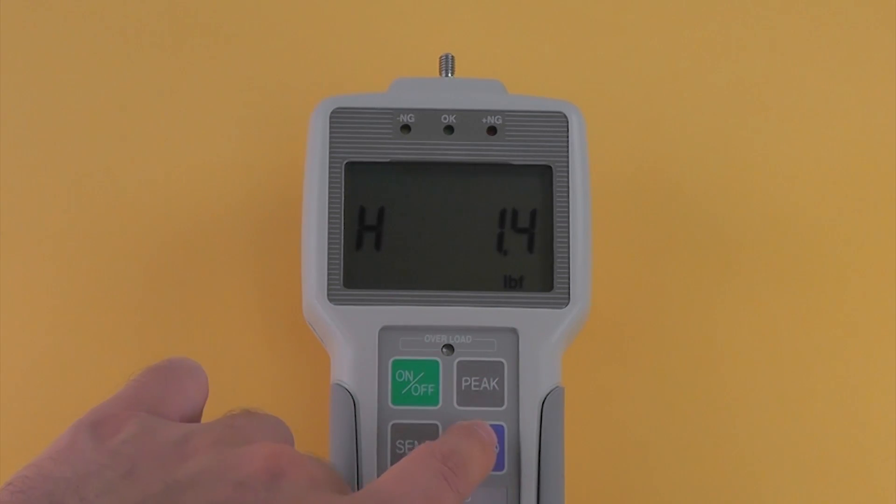Press peak to increase and zero to decrease. Press send to save the high set point. Once again, press peak to increase and zero to decrease the low set point value. Press send to save. Press send once more to exit power on programming mode.